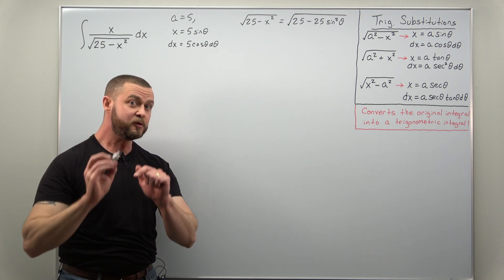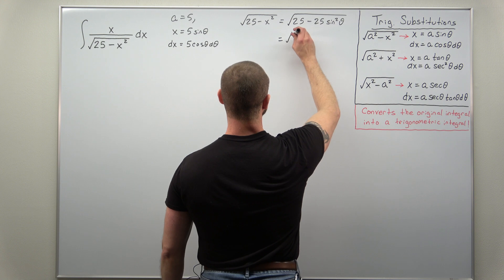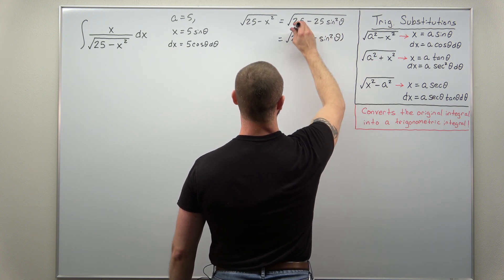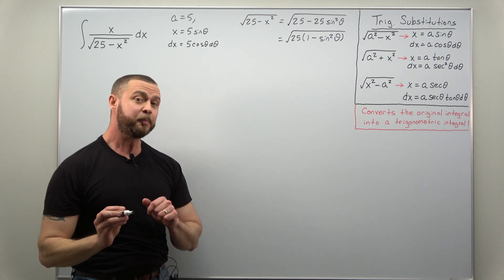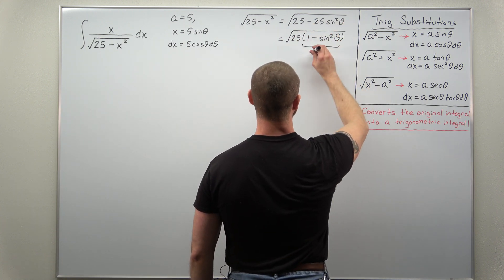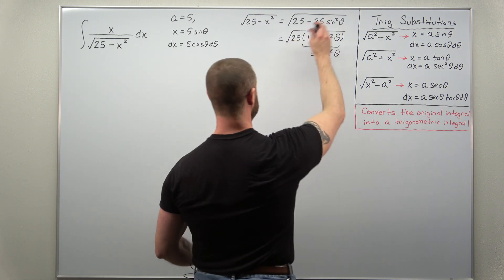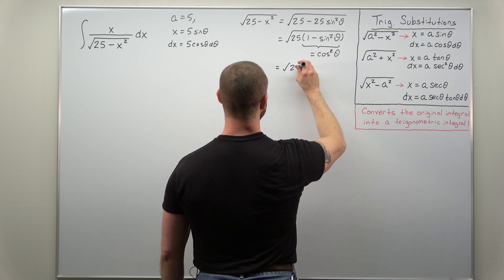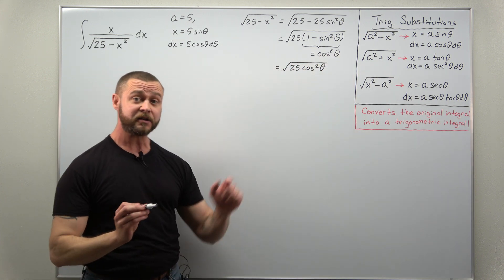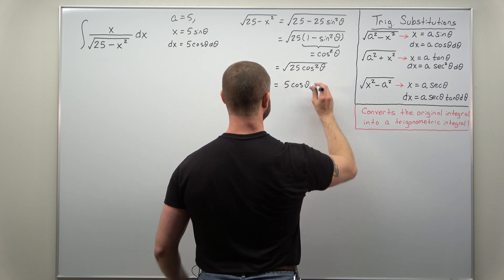We'll use a Pythagorean identity, but first we factor out 25 inside the square root, giving us the square root of 25 times (1 minus sine squared theta). Now we apply the Pythagorean identity: 1 minus sine squared equals cosine squared. Replacing that inside the square root gives us the square root of 25 times cosine squared theta. Taking the square root of each factor, the square root cancels and we get 5 times cosine theta.